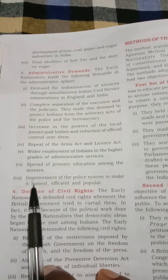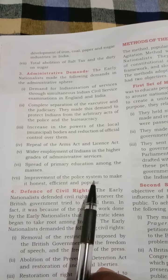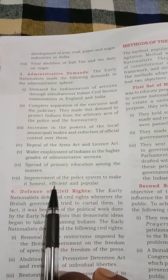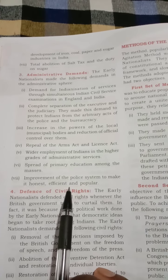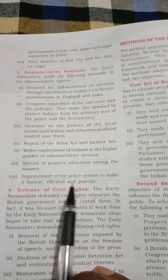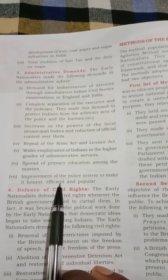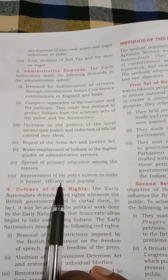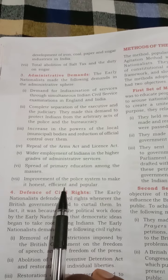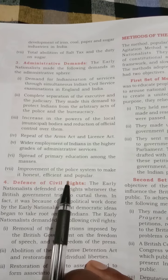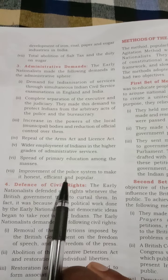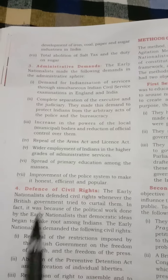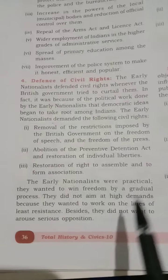The seventh demand was for improvement of the police system to make officials honest and efficient for the people. The police department should be more honest and efficient, and the people should have the belief that the police exist for their protection and well-being.